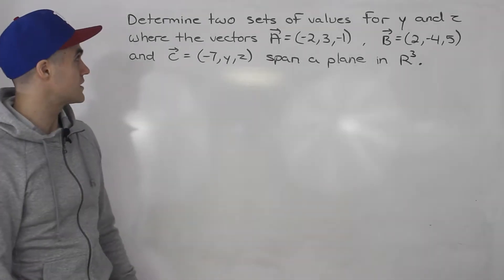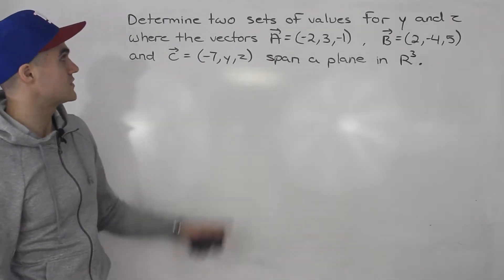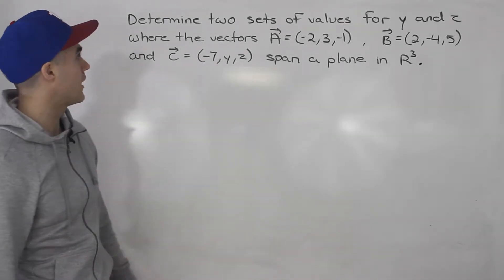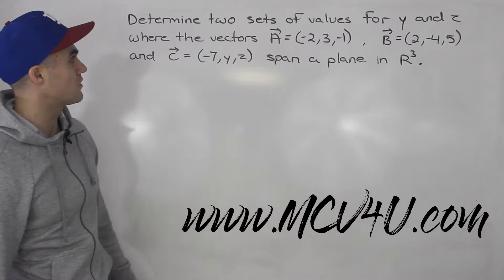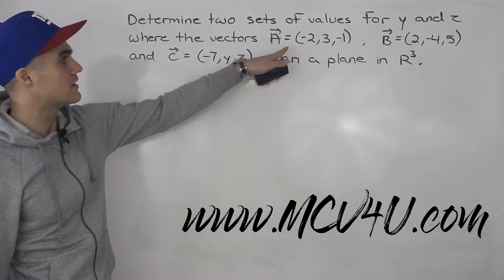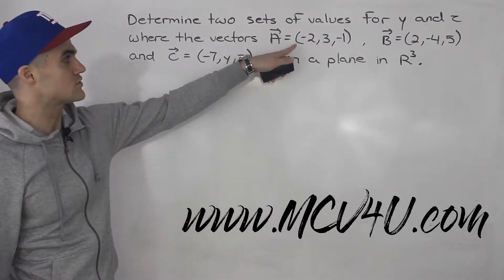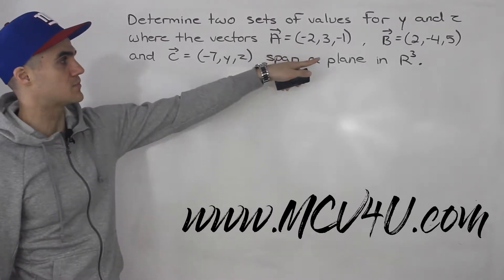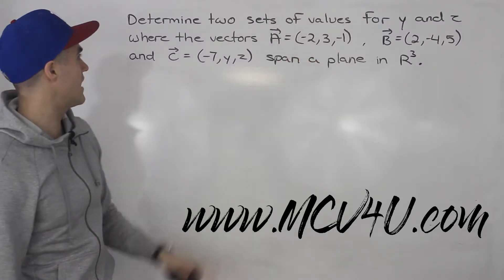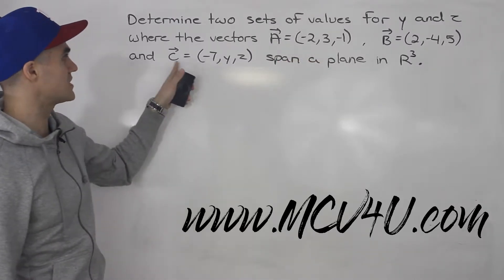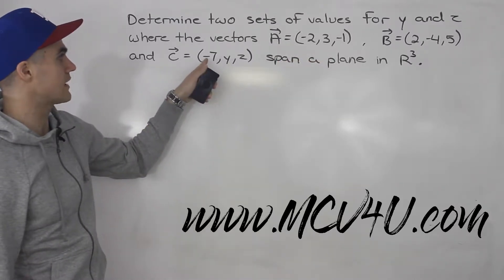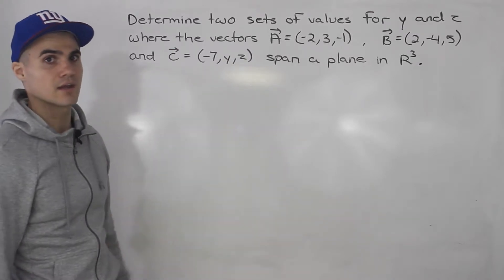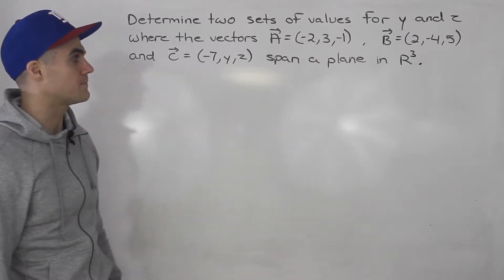Welcome back, everybody. Moving on to the next question, we have to determine two sets of values for y and z where the vectors a, which is negative 2, 3, and negative 1, vector b: 2, negative 4, and 5, and vector c: negative 7, y, and z, span a plane in R3.